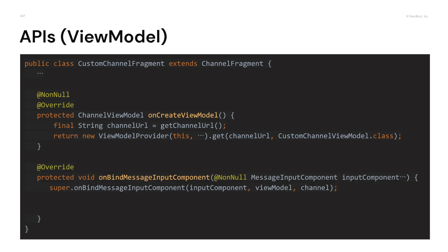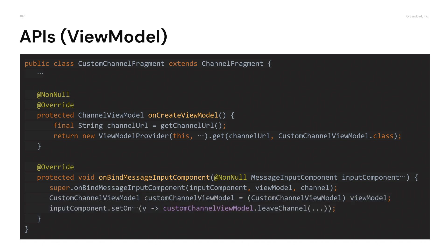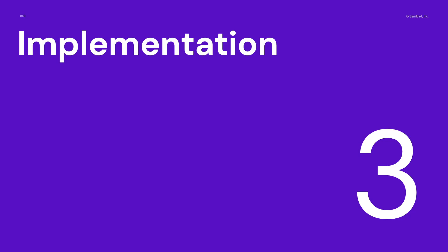Let's bind the newly added ViewModel API to the component. Overwrite the onBindSomeComponent method. Inside here, we should cast the ViewModel to the custom channel ViewModel so we can use the leaveChannel method we added. Up to this point, we have covered the customization supported by UIKit version 3.